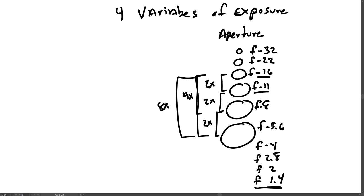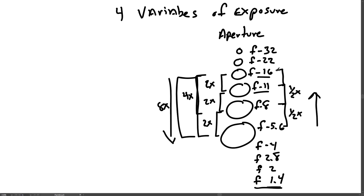Moving in the opposite direction towards smaller apertures: if you move from f5.6 to f8, f8 is a smaller aperture and lets in half as much light. Moving from f8 to f11 is half as much light, and f11 to f16 is half as much light. So moving from f5.6 to f11 is one-half times one-half, which is a quarter of the amount of light, and from f5.6 to f16 is one-eighth the amount of light.